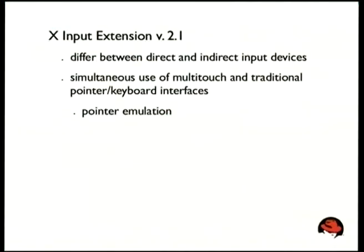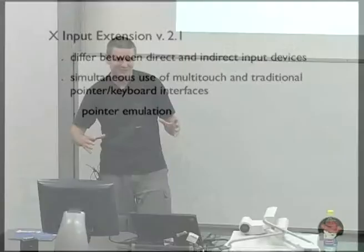Next layer up: what do we have in X so far? This is very much under development. The fixed part at this point is that multi-touch will be part of X Input Extension version 2.1. Version 2 revamped most of the input subsystem and gave us multiple mice and keyboards, and we're adding multi-touch on top of that — which turns out to be surprisingly easy once you figure out all the semantics. XI 2.1 will give us simultaneous use of multi-touch and traditional pointer/keyboard interfaces — so you can use your mouse, a touchpad, and multi-touch on the screen directly, all simultaneously and independently.